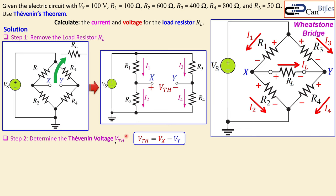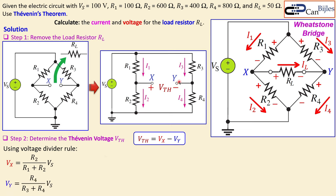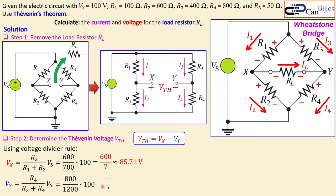Using the voltage divider rule, the voltage at node X with respect to ground is: VX = (R2 / (R1 + R2)) × VS. Similarly for node Y: VY = (R4 / (R3 + R4)) × VS. Substituting the given values, VX = 600/700 × 100 = 600/7 ≈ 85.71 volts. For VY, you get 200/3 ≈ 66.67 volts. So we now have both node voltages.